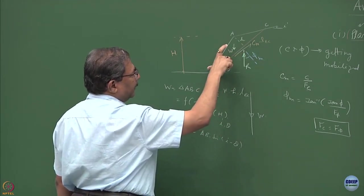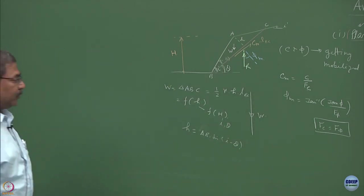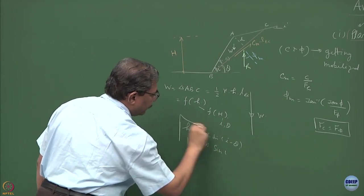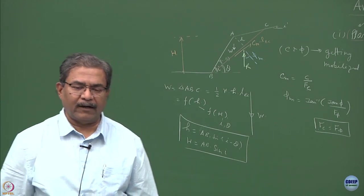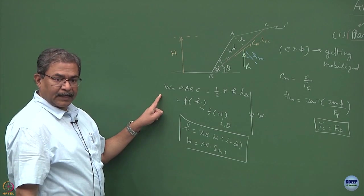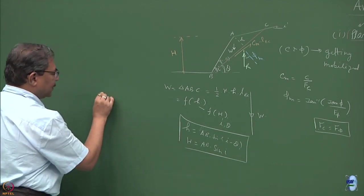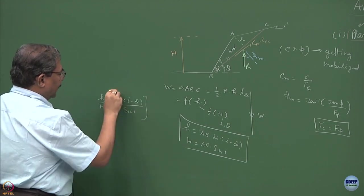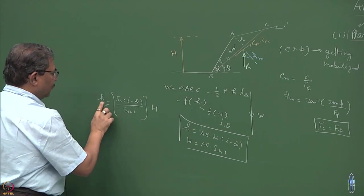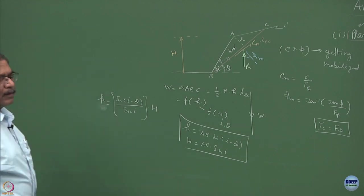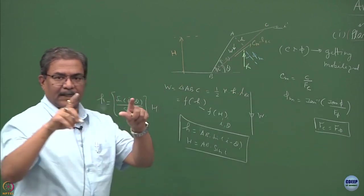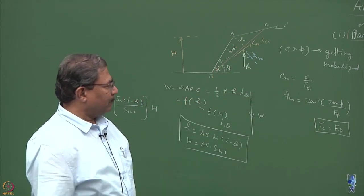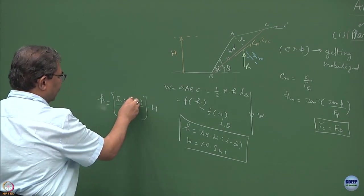What is capital H? H is equal to AB times sin of i minus theta, and this can be expressed. BC is known. I can draw this section on a graph paper, I can find out the length. Otherwise also I can compute the weight of the block by plotting it on a piece of graph paper. That can be done graphically or analytically you can obtain it like this.